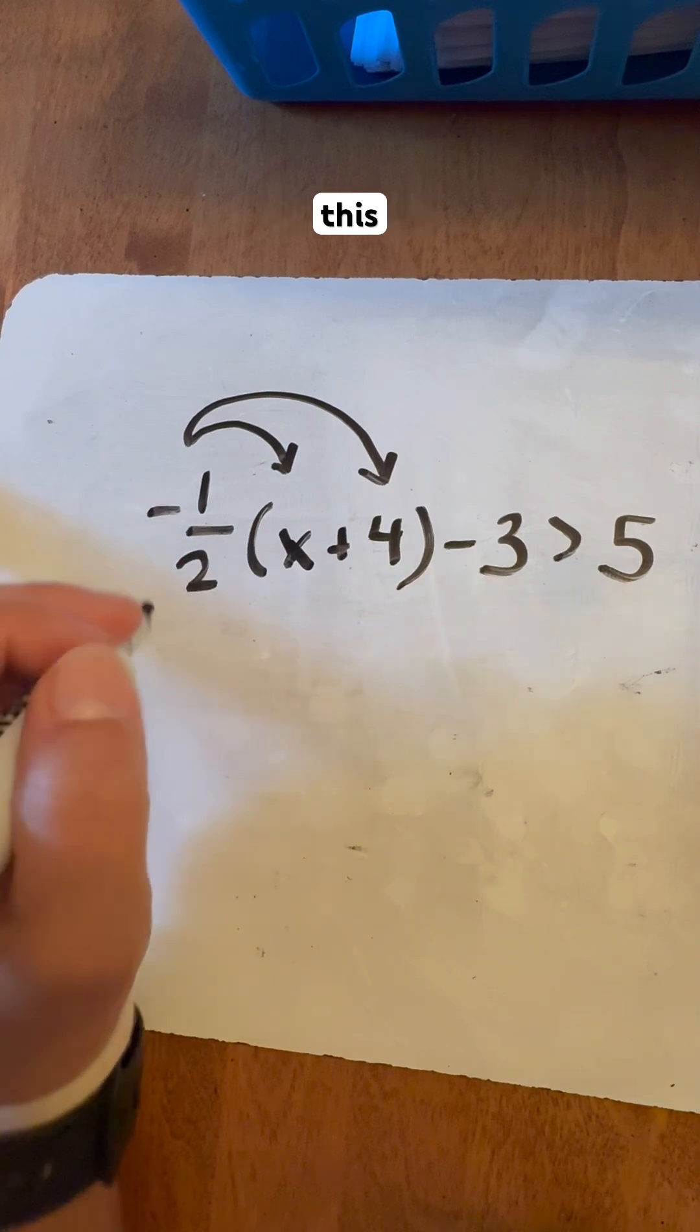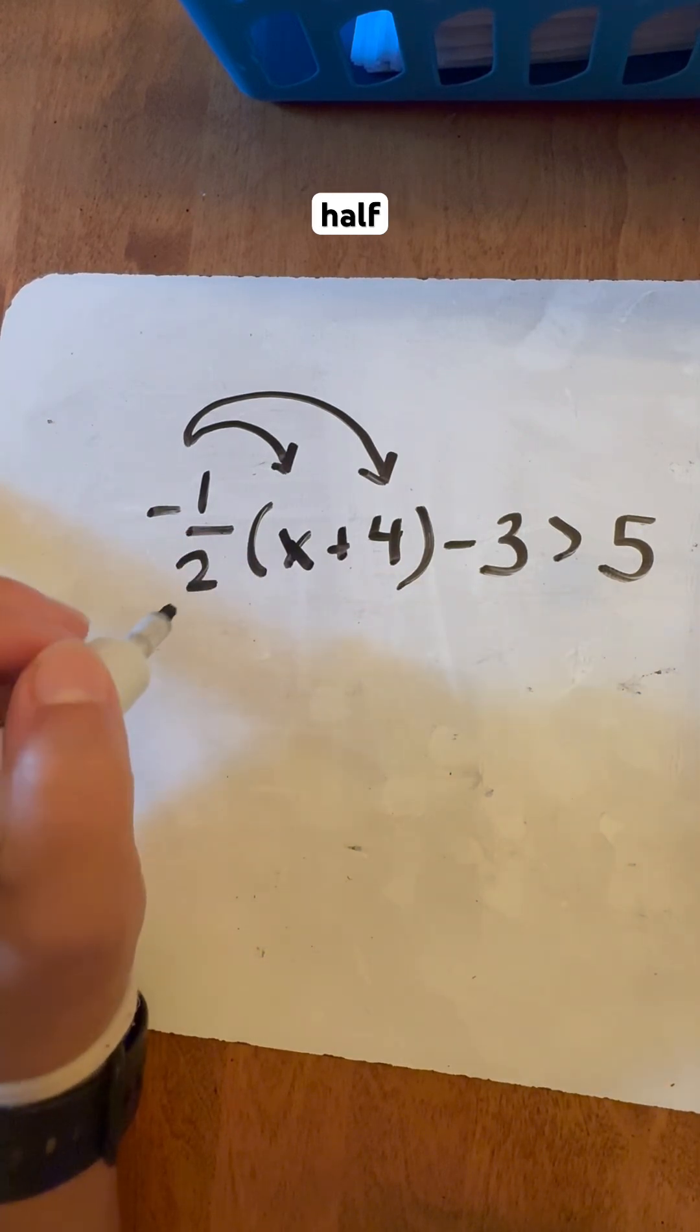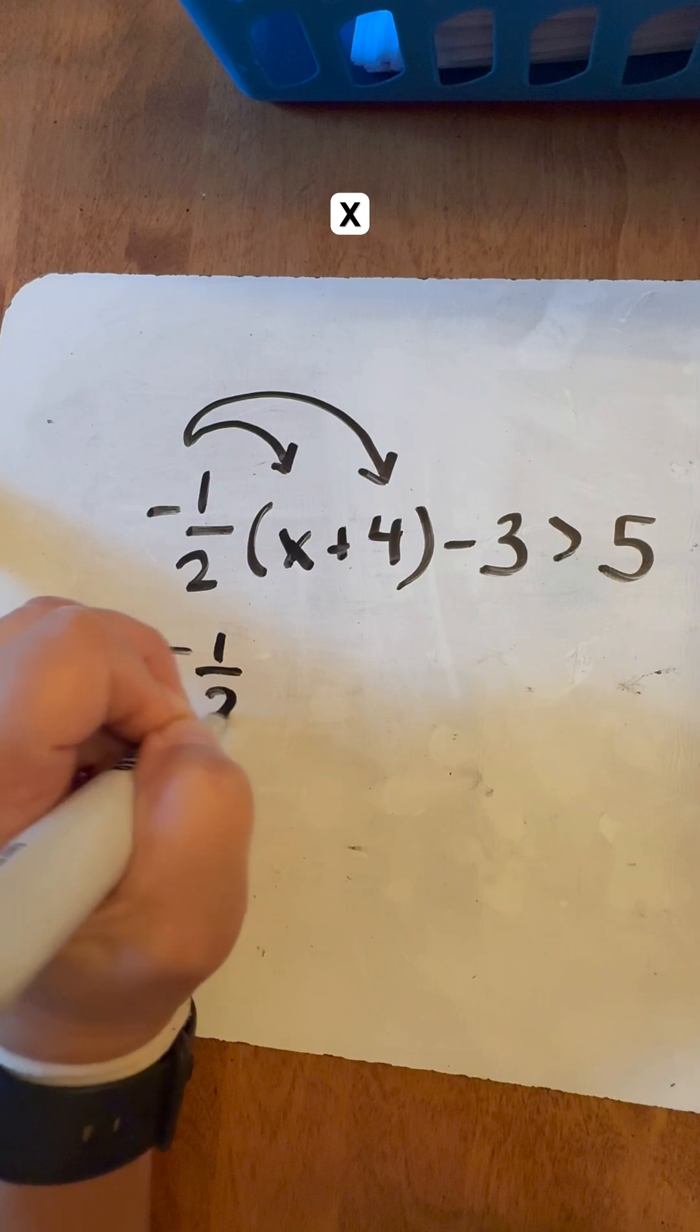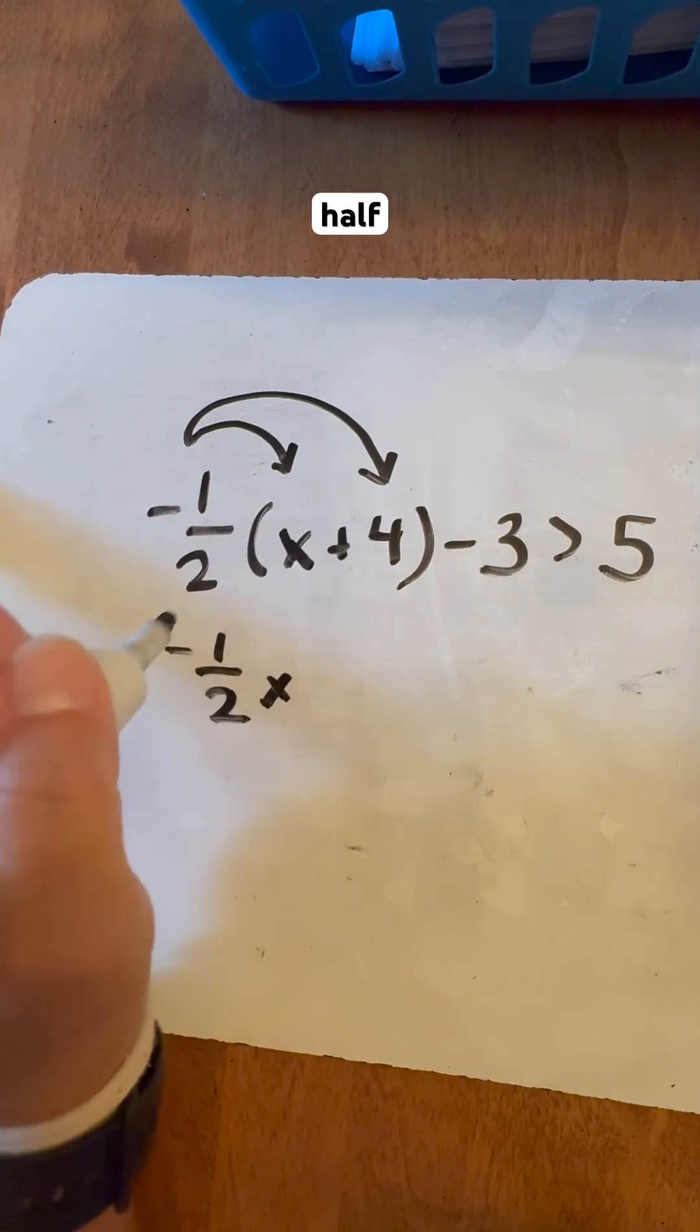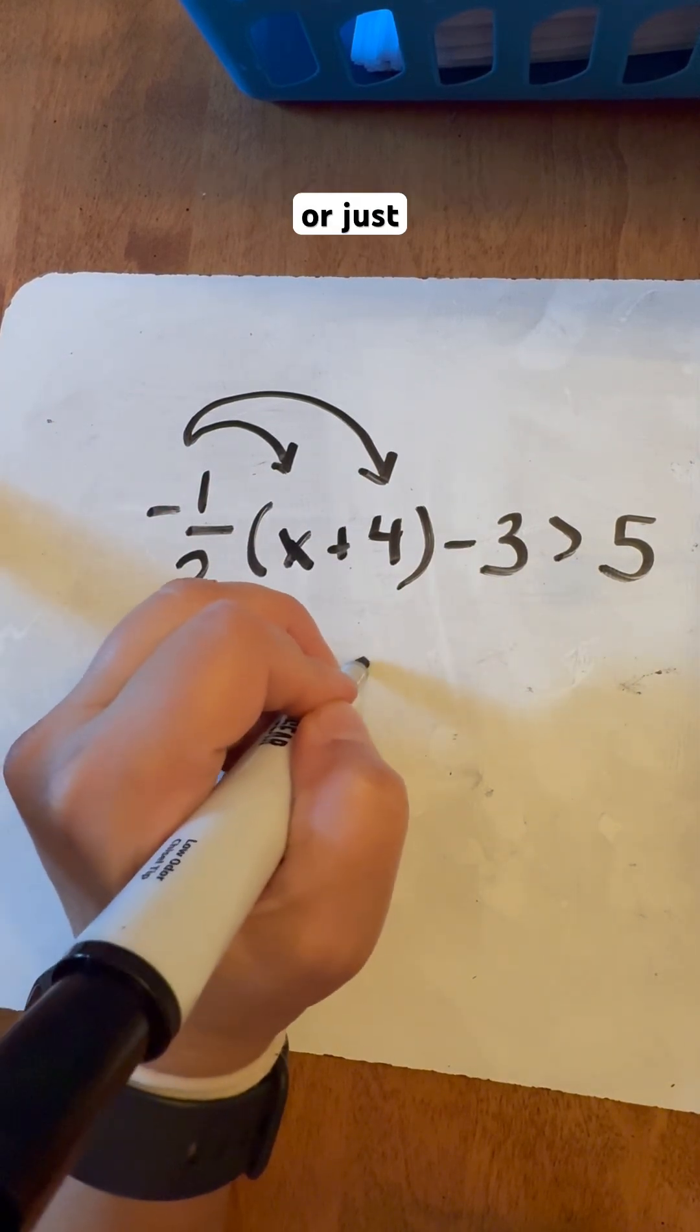So we'll next do this. So negative half times x is going to be negative one half x. And then a negative half of four is going to be negative two or just minus two.